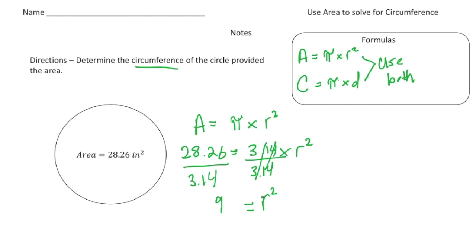To solve for r, we're going to square root both sides, so the radius is going to be 3. Now that we know the radius, we also know the diameter, because the diameter is twice the radius. So if the radius is 3, we know the diameter is going to be 6.